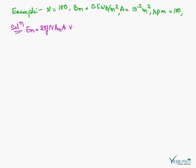These are the things which are given: N, number of turns, is hundred; Bm is flux density; A is area; and rotation per minute is hundred. So Em is given by e equals Em sine theta.